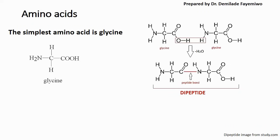The peptide bond is formed when the OH group from the carboxyl group of one amino acid reacts with the hydrogen on the amine group of the next amino acid, releasing water. Once water is released, the bond formed between them is called a peptide bond. After this reaction, the carboxylic group no longer has an OH attached to it — that OH was released as part of the water — and the amine group only has one hydrogen remaining.